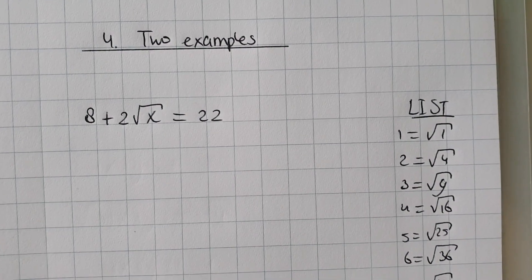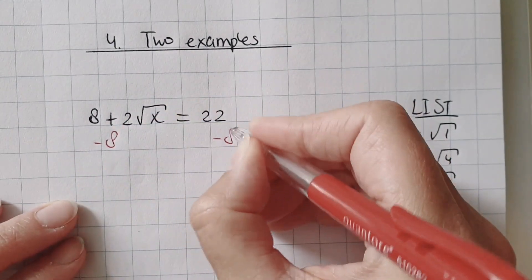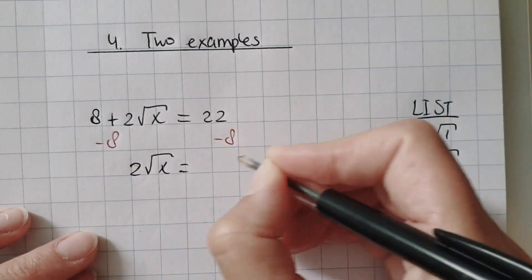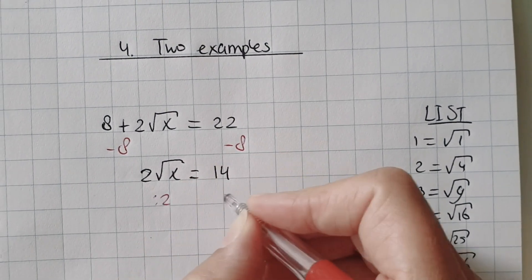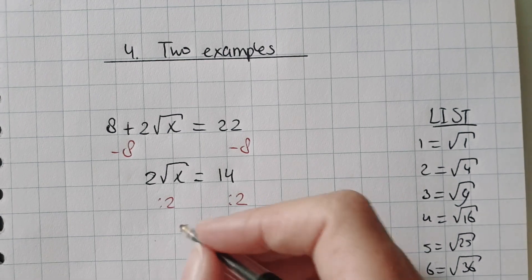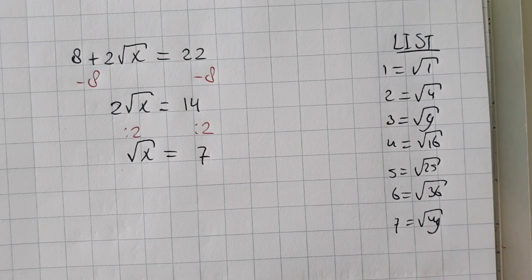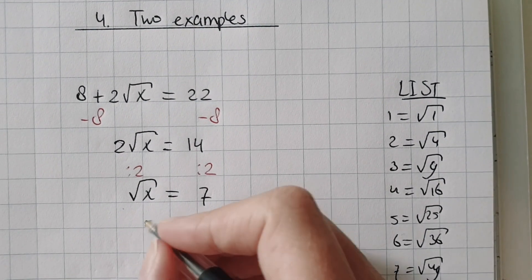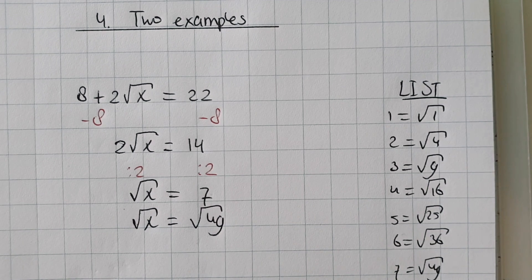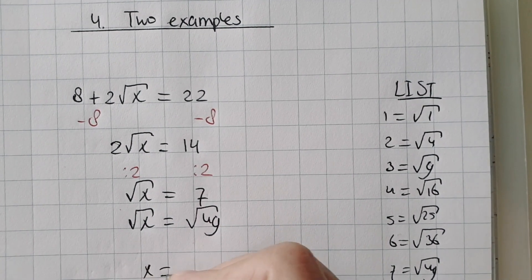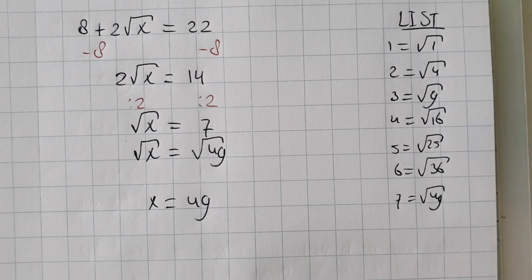And the last example. First, I have to make sure on the left side there are only square roots, so I do balance method: first minus 8. The leftover is 2 times square root of x, and minus 8 is 14. Then I divide by 2, and that's 7. Now I look at my list: 7 is square root of 49. So I rewrite 7 as square root of 49. On both sides I have square roots, so I make a new equation: x is 49. It's already done — usually you have to do balance method here, but now it's just done.